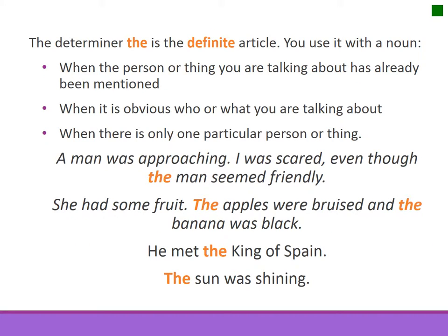The determiner the is the definite article. You use it with a noun when the person or thing has already once been mentioned, when it is obvious who or what you are talking about, or when there is only one particular person or thing.